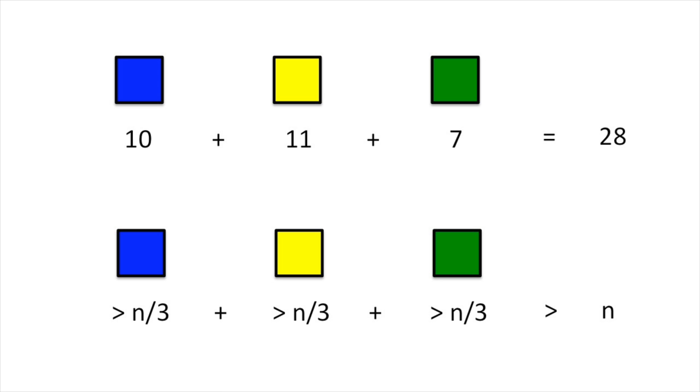This proves that there is at least one color with no more than n over three corners, and so we have proven the art gallery theorem.